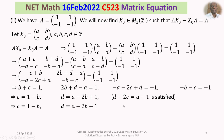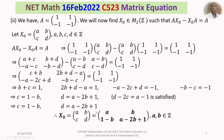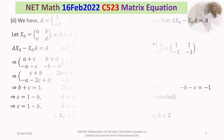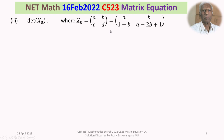Therefore X₀ = [[a, b],[1−b, a−2b+1]] where a, b ∈ ℤ. How many solutions X₀ are there? Infinitely many, since a and b are free integer parameters. Now we turn to the determinant of X₀ and which values are not possible for det(X₀).